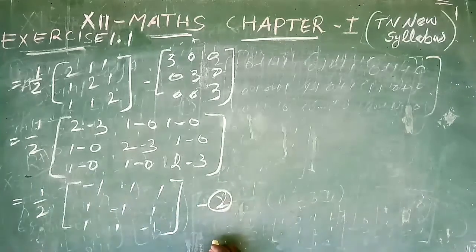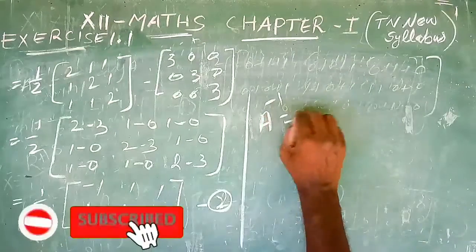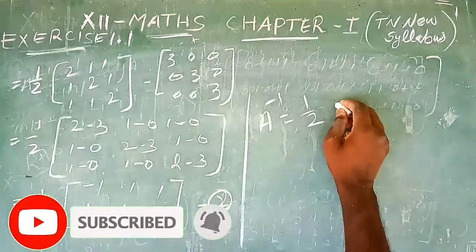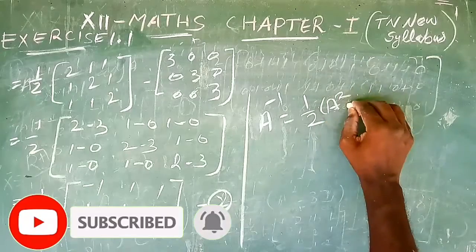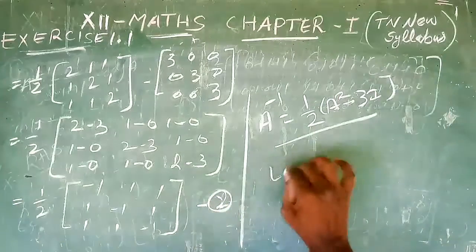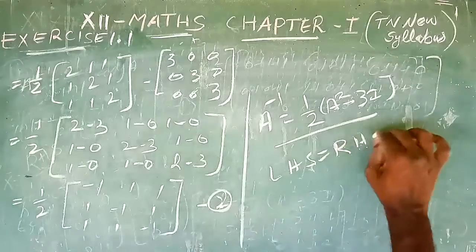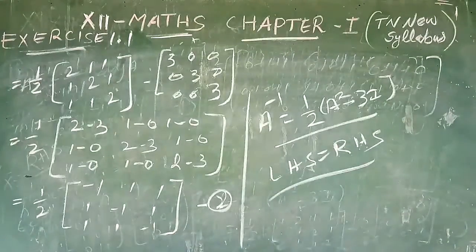So A inverse equals 1/2 × [[−1, 1, 1], [1, −1, 1], [1, 1, −1]]. The left-hand side equals the right-hand side, so both give the same answer. Thank you.